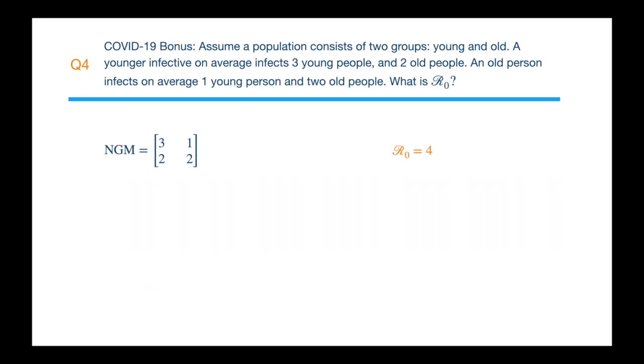And if you happen to be in a scientific committee meeting where there's no time for mental calculation of eigenvalues, then we know a young person infects five people in total, and an old person infects three. So the average is four, and that's our R₀.